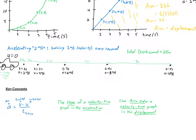Let's summarize the three key concepts. First, the acceleration equation: acceleration equals final velocity V minus initial velocity U, divided by time t. Make sure you don't confuse V and U — final velocity is how fast we end up going, initial velocity is how fast we were going at first. Second, the slope of a velocity-time graph is the acceleration. Third, the area under a velocity-time graph is the object's displacement.